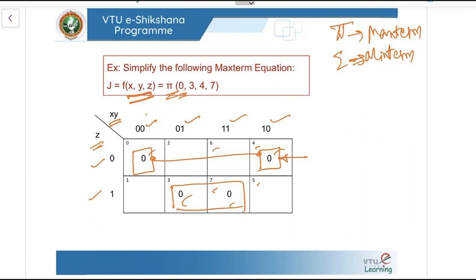For the first group, we compare positions 0,0 and 1,0. The X value changes from 0 to 1 while Y remains 0 — unchanged. Therefore we get Y. For 0 you write the variable as it is, and for 1 you take the complement. On the vertical side we have Z which is 0, therefore we get the expression as Y or Z.